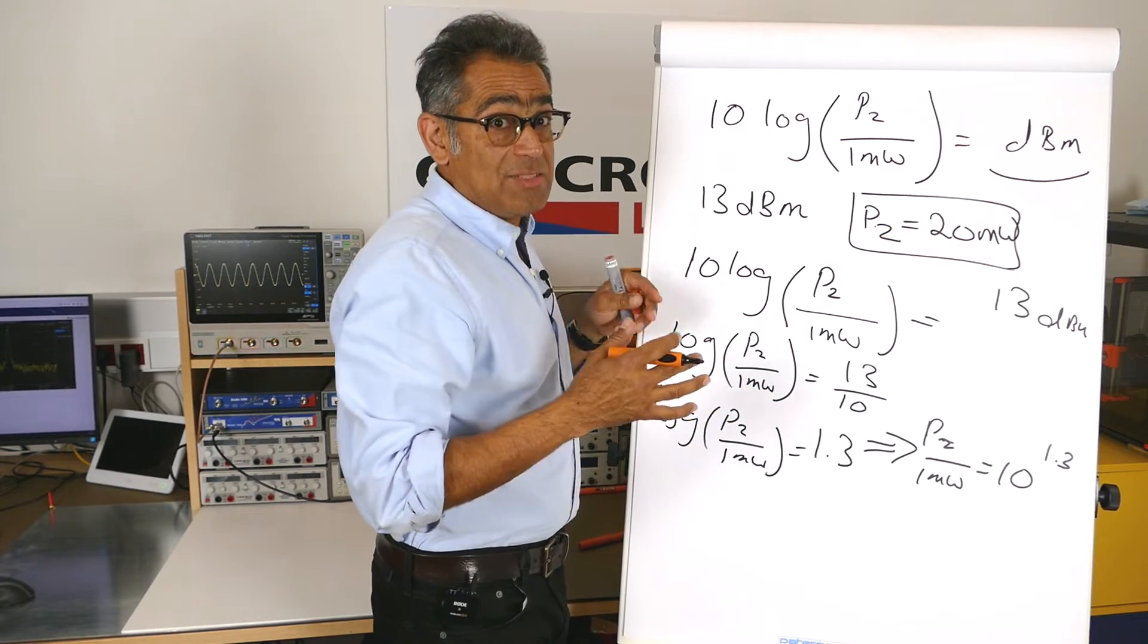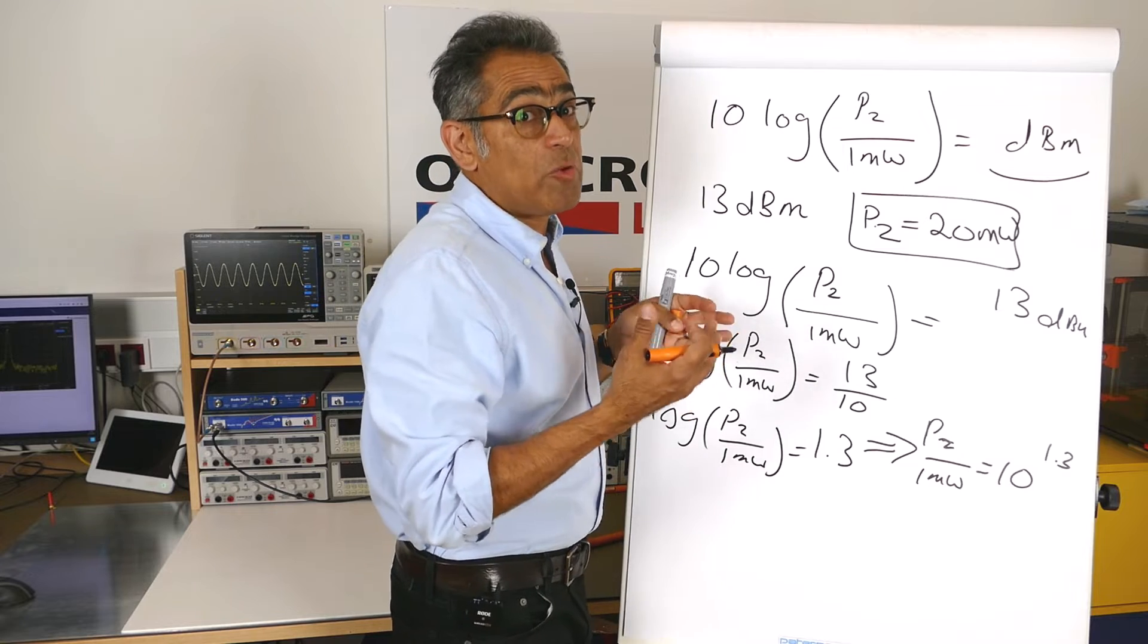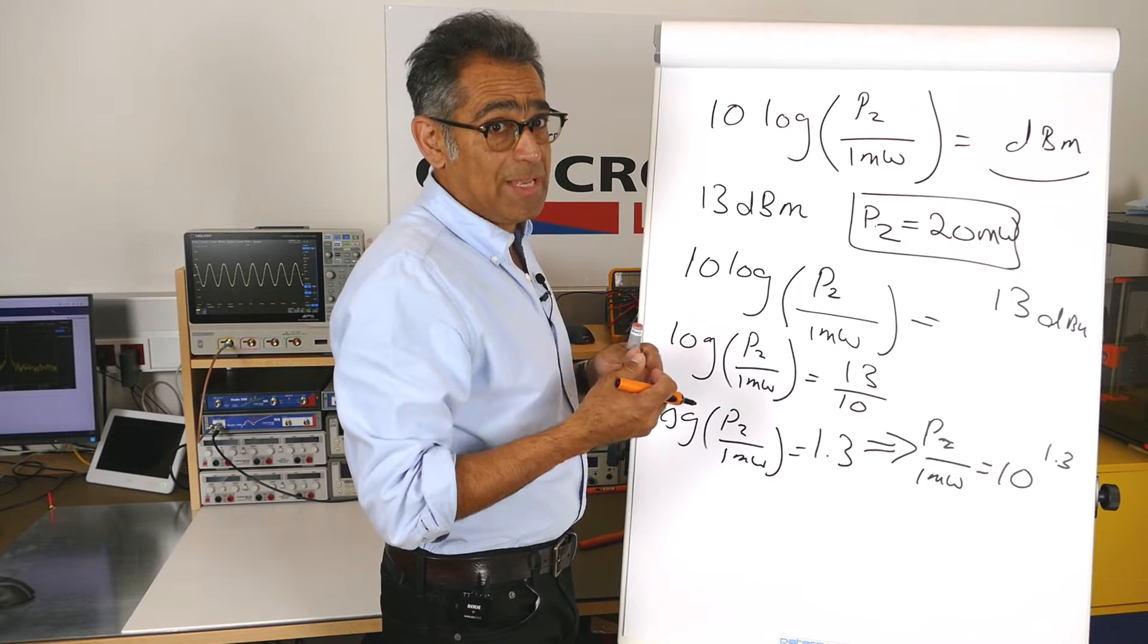So that is how we define dBm, and that's how we can convert it into watts. Now sometimes you see things like dB microvolts, or dB microvolts per meter. These are very common in EMC standards.